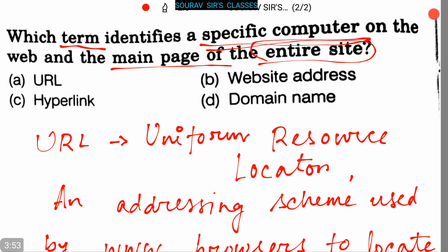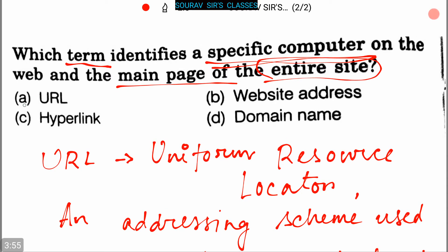So here option A, that is URL, is the correct answer. URL identifies a specific computer on the web and the main page of the entire site.